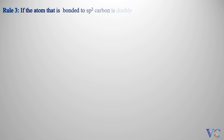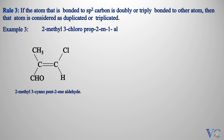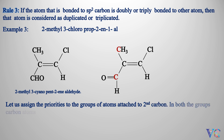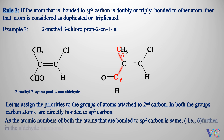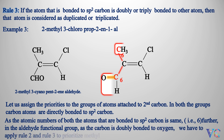Rule 3: If the atom bonded to the sp2 carbon is doubly or triply bonded to another atom, then that atom is considered as duplicated or triplicated. Example 3: 2-methyl-3-chloroprop-2-en-1-al. Let us assign the priorities to the groups of atoms attached to the second carbon. In both groups, carbon atoms are directly bonded to the sp2 carbon. As the atomic number of both atoms bonded to the sp2 carbon is the same (6), and in the aldehyde functional group the carbon is doubly bonded to oxygen, we have to apply Rule 2 and Rule 3 to prioritize the methyl and aldehyde groups.